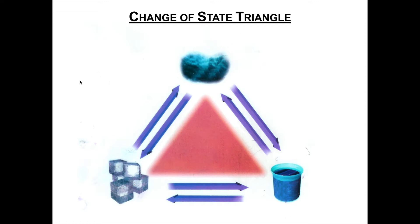Down in the bottom corner on the left, what do you think that state of matter is? It is solid. And then over here, the state of matter inside the container — that's going to be liquid. And up at the top we've got a cloud that represents the state of matter. What do you think it is? It is gas. So now we're going to talk about what happens to those different states of matter to change between each other — we can go from one state of matter to another.